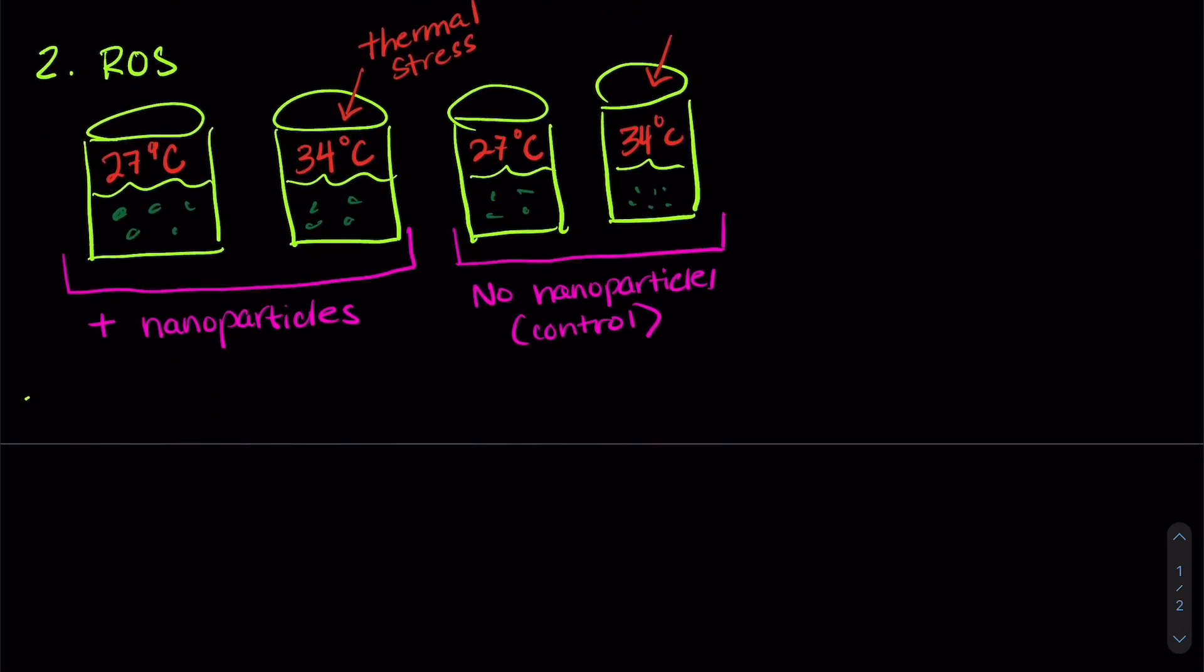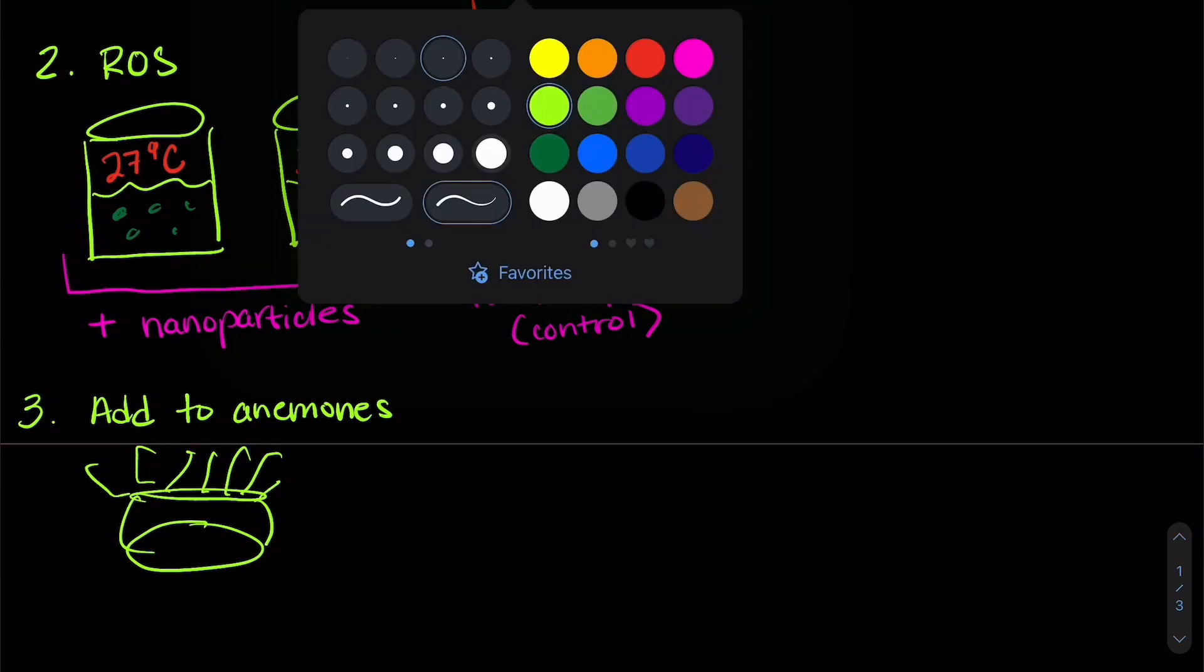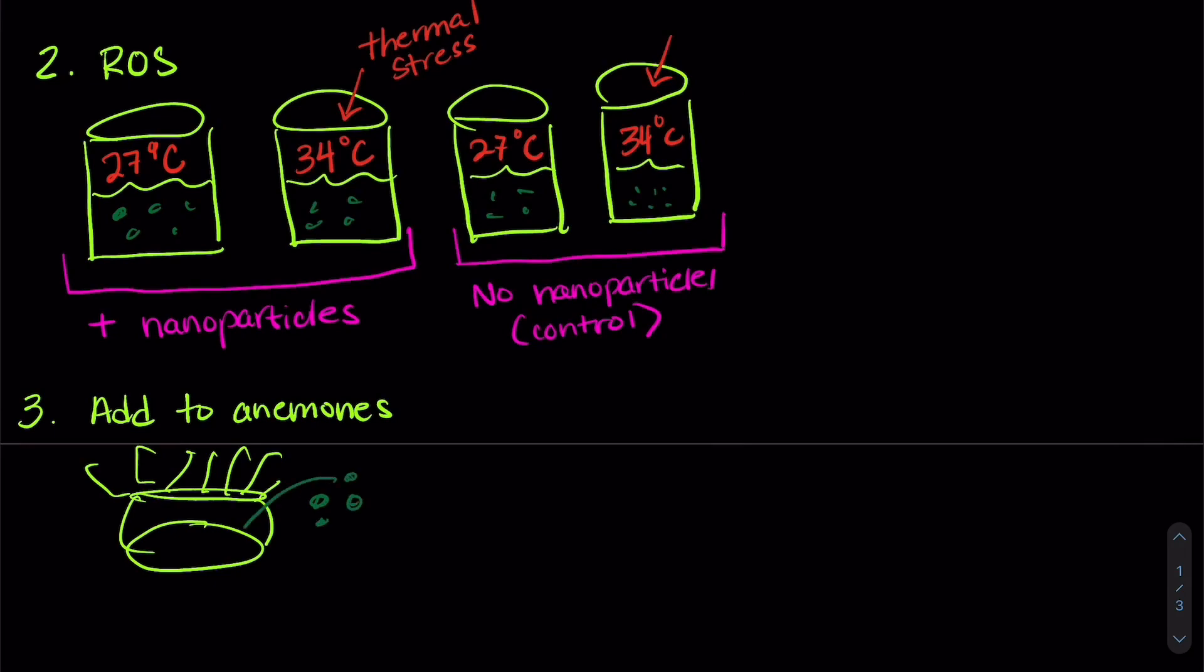And the third thing they did was they added these nanoparticles to an organism to make sure that they could actually add them to an organism. And so they used anemones, because they're easier to work with in the lab than corals are. And they added our algae with the nanoparticles to make sure that it worked. And they used a microscope to check on them.